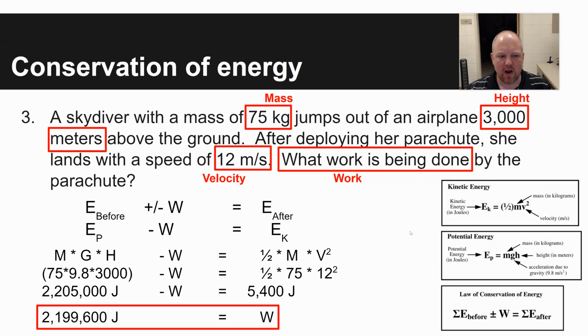So beforehand, you are off the ground, and so you're going to have potential energy. At the end of this scenario, you are just about to land, so you're not off the ground anymore, and you're moving at a velocity of 12 meters per second, so you have kinetic energy.